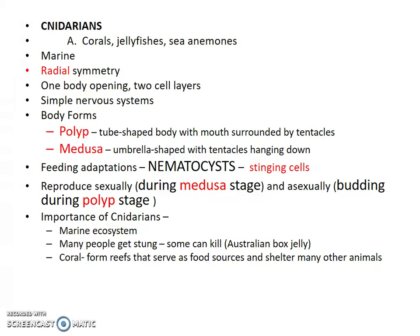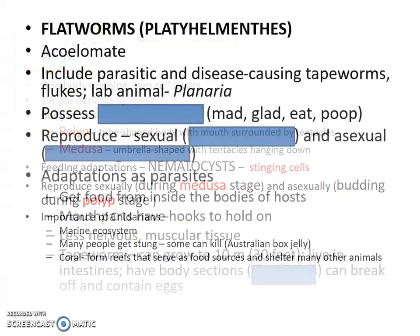They are a very important part of the marine ecosystem. They are predators, and many people can get stung — some can kill. For example, the Australian box jelly from genus Irukandji is no bigger than your thumb, and it releases such a powerful toxin that it can kill an adult. Coral reefs are important ecologically because they serve as a food source and shelter for other animals, and they can also help protect land masses.